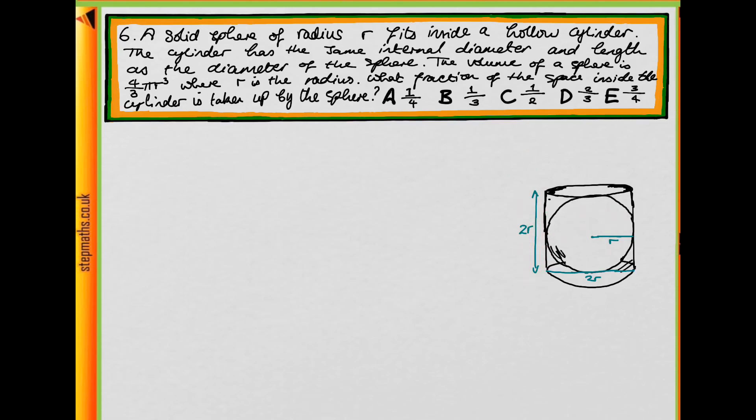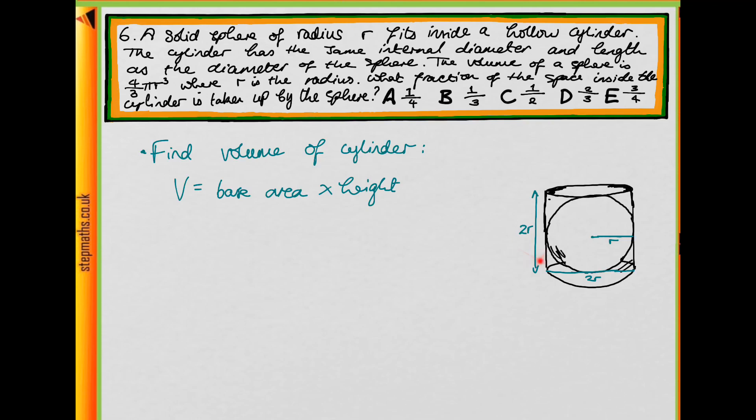What we're going to do is find equations for the volume of the cylinder and the volume of the sphere, and then we're going to compare them. To find the volume of the cylinder we need the base area times the height. Have a go at doing this now.